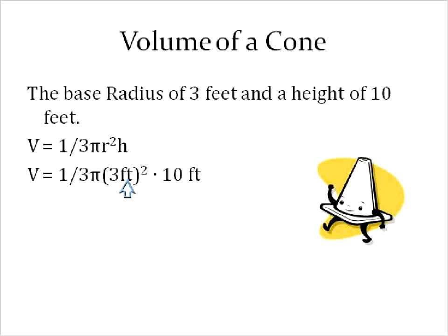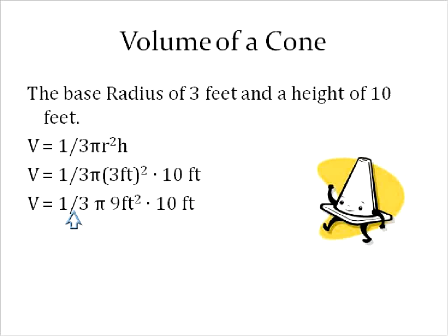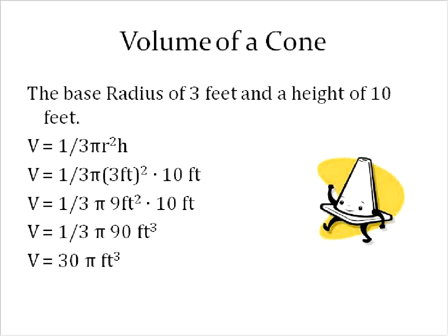Here we've substituted in the values we know. The radius is 3 feet, the height is 10 feet. The first thing we do with order of operations is square 3 feet: 3 squared is 9, so 9 feet squared. In our next step, we multiply 9 feet squared times 10 feet to get 90 feet cubed. Then I multiply 1 third times 90 feet cubed to get a final exact volume of 30 pi feet cubed. Since we don't usually speak in terms of pi, the approximate volume is 94.25 feet cubed.